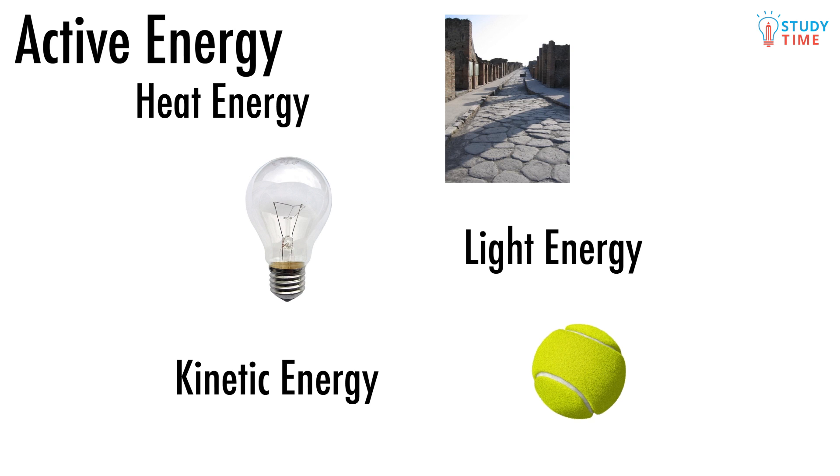These three kinds of energy are commonly called active energy, essentially because they're doing something. For example, the pavement is giving off heat, a light bulb is giving off light, and the tennis ball is moving. When an object has active energy, it is using up the energy right now doing whatever it's doing.